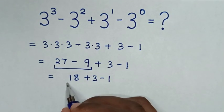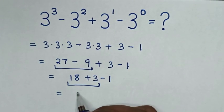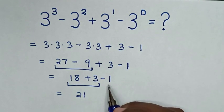Then we continue with the next operation: 18 + 3 is 21, then minus 1.